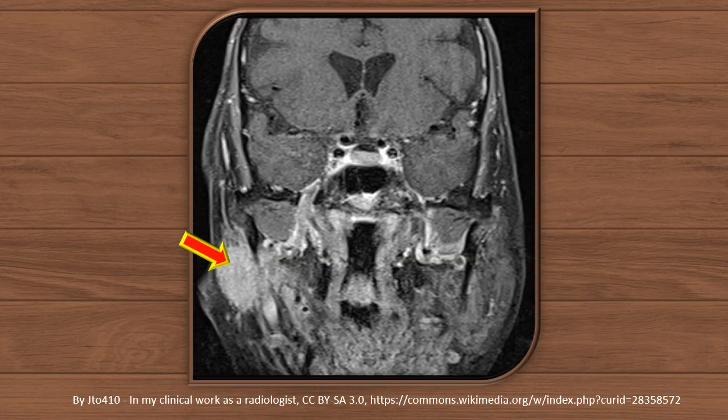This is another coronal section showing pathology of the left-side parotid gland. You can see a white intensity zone — that is probably a parotid mass, most likely a carcinoma. The flashing region represents the parotid tumor.